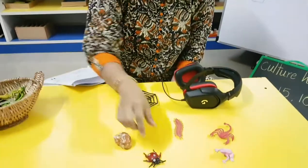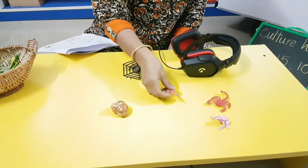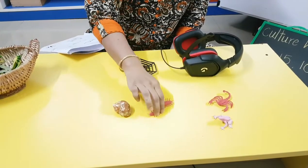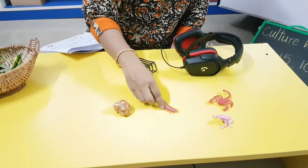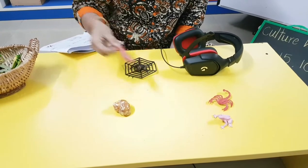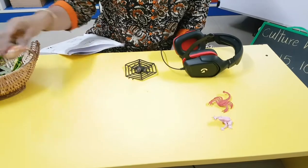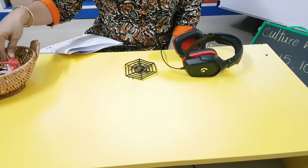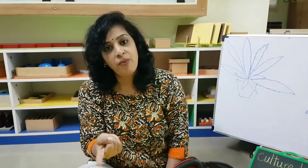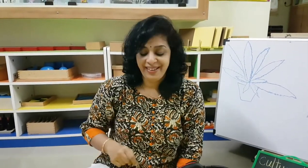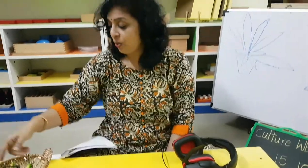Grasshopper, mantis, ladybird, centipede. Centipede — the name means hundred legs, but it actually doesn't have exactly a hundred legs. It may be one more or one less, meaning the number of legs is always odd — either 101 or 99.